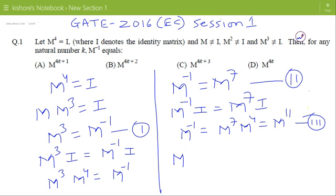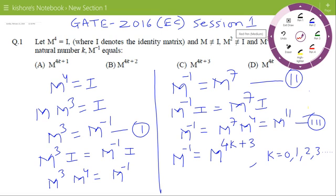Write M inverse as M to the power 4K plus 3, where K is 0, 1, 2, 3 and so on. So the correct option is C.